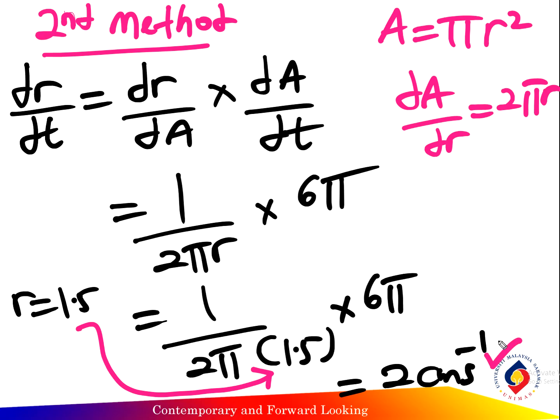The rate of increase of the circle equals 2 cm per second. So this question has two methods: either use the first method dA over dt equals dA over dr times dr over dt, or the second method using dr over dt equals dr over dA times dA over dt.